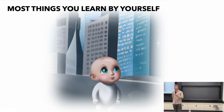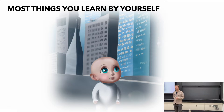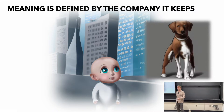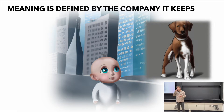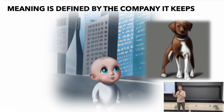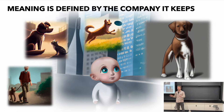Most things you know, you learn by yourself. So how is this possible? Let's take the example of learning what a dog is. You don't learn what a dog is from your parent pointing it out or from your emotions guiding you. You learn what a dog is by defining the meaning of a dog by the company it keeps. We learn what a dog is by correlating and contrasting dogs with other concepts, by observing dogs in different contexts.